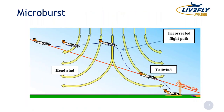Microbursts are typically associated with convective activity and are very hard to predict. If you get in or near one, you need to get out of there as fast as you can. Microbursts cause dramatic downdrafts, and even if you're not caught directly in a downdraft, the shearing from headwind to tailwind can also be very devastating to a small general aviation aircraft.